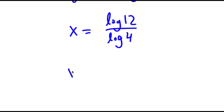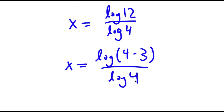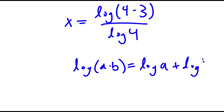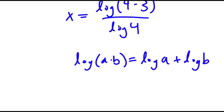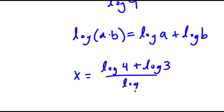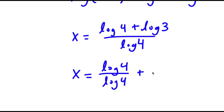Now, log 12 is equal to log 4 times 3, and I have this over log 4. If I have something in the form log of a times b, this is equal to log a plus log b. So log of 4 times 3 is going to equal log 4 plus log 3 over log 4.